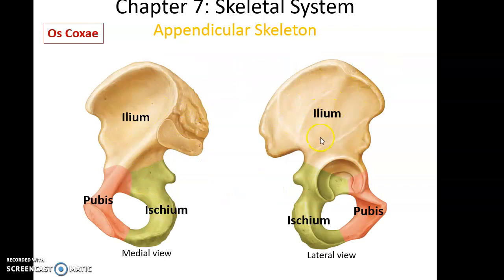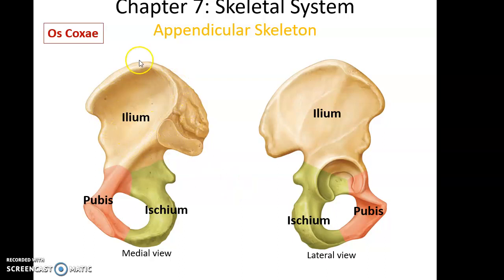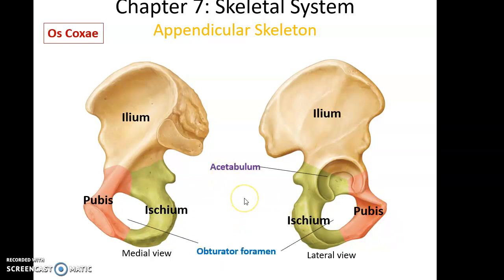Here are two views of the os coxae: medial view and lateral view. We have three component bones that eventually fuse to form the os coxae, and we continue to name those regions based on the names of those bones. This includes the ilium, which is superior; the pubis, which is anterior; and the ischium, which is posterior.